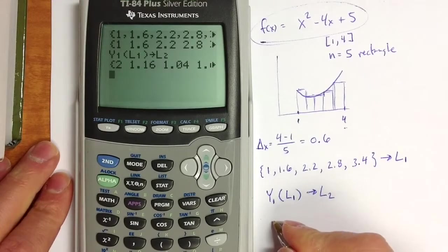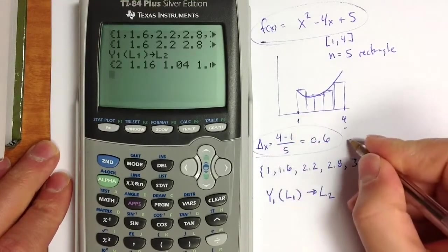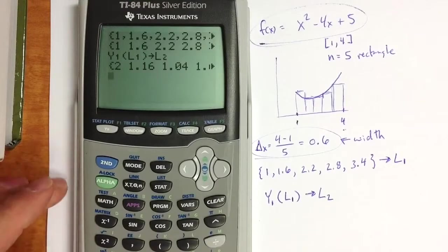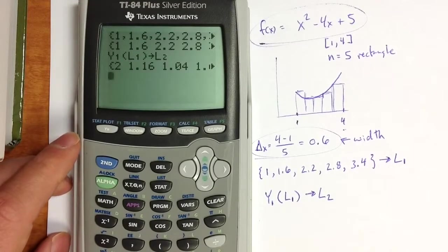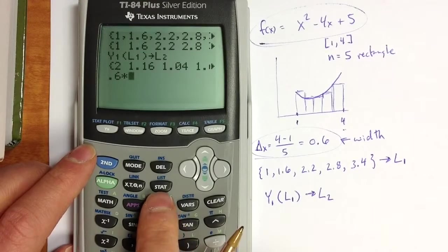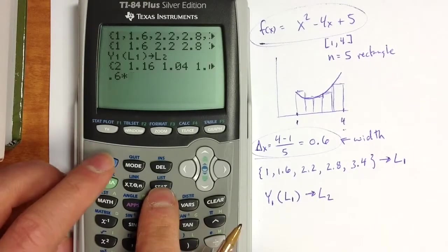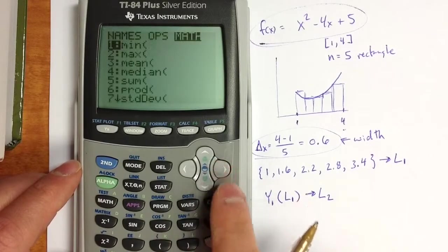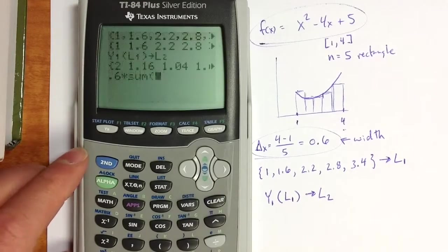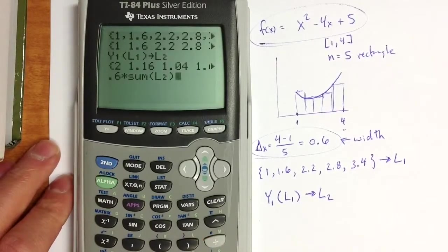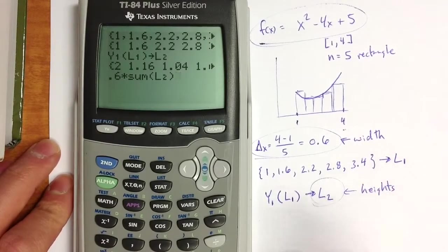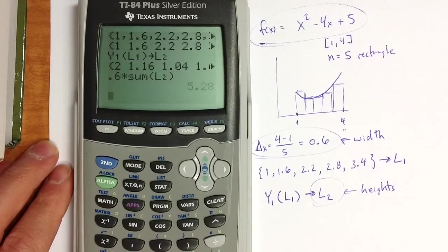To finish the problem, to complete the Riemann sum, I basically want to multiply those heights by the width that we found. We're using an equal width for every rectangle. So I'm going to multiply that by the width of 0.6. And I want to multiply the width times the sum of the rectangles. So there's a sum command under the list menu, which is above the stat key. It's under the math option, using the right arrow to find the math option. I can go down to sum. And I want to take the sum of list 2, which has our heights. List 2 now has the heights of those rectangles. So if we add up all the heights and multiply by the width, we get an approximation.